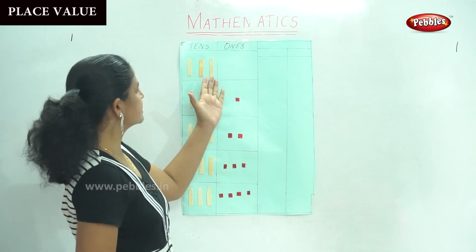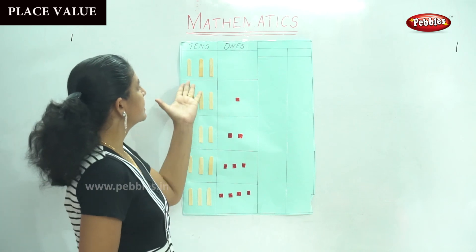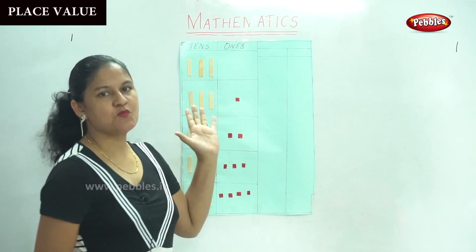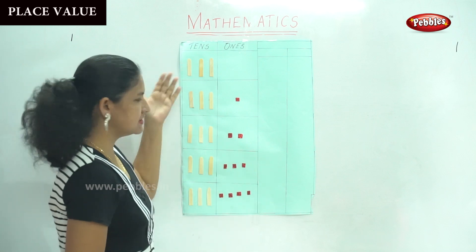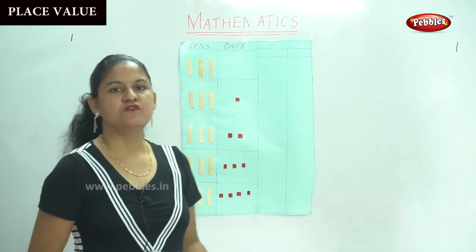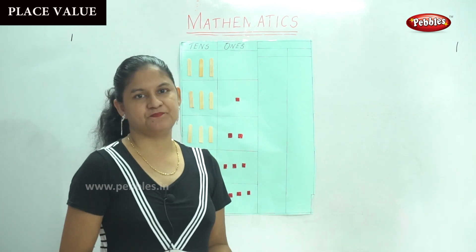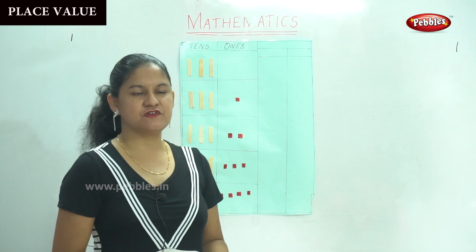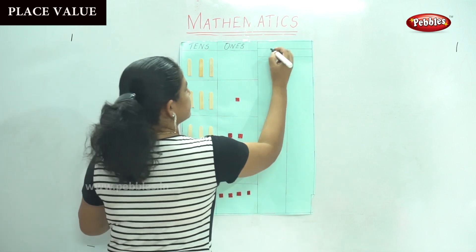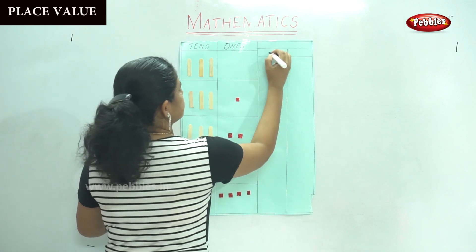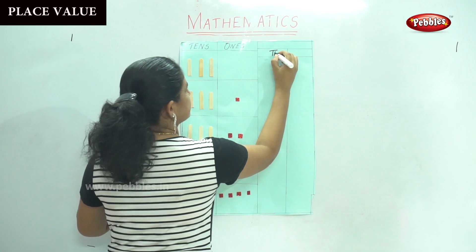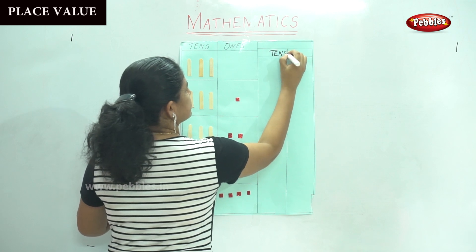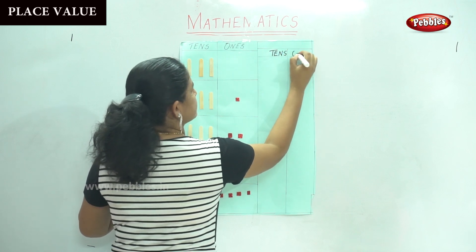Now we are going to see the tens and ones place of the numbers 30 to 40. So this is the tens house and this is the ones house.